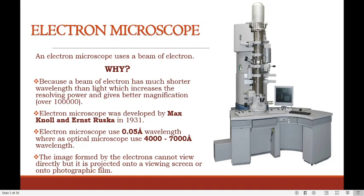Electron microscopy is a technique used for obtaining high-resolution images of biological and non-biological specimens. An electron microscope uses a beam of electrons instead of light as in light microscopes. The reason is that a beam of electrons has a much shorter wavelength than light, which increases the resolving power and gives a better magnification over 1 lakh.